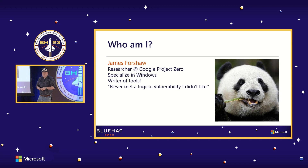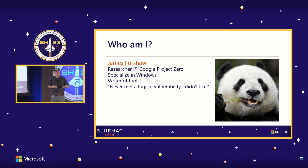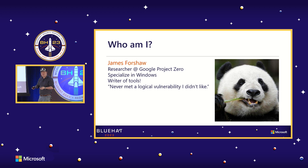For people who don't know who I am, I'm James. I'm a researcher at Google's Project Zero team. Project Zero is a team inside Google who finds vulnerabilities in third-party products — we consider things like Android to be third-party from our perspective, even though we are employed by the same people. I specialize in Windows, otherwise I probably wouldn't be speaking at a Microsoft conference.